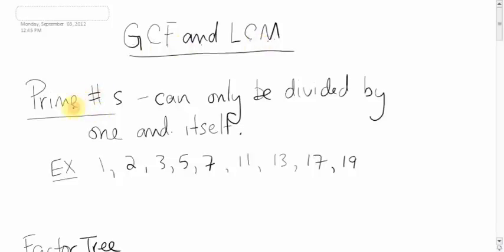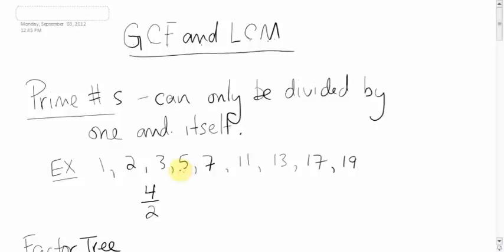Before we get to these, let's talk about something I'm sure you've heard of: prime numbers. Prime numbers are numbers that can only be divided by 1 and itself. For example, 2 is prime because 2 can only be divided by 1 and itself. 3 is prime. 4 is not prime because 4 can be divided by 2 as well as 1 and itself. 5 is prime.